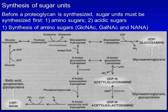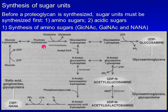All amino sugars — N-acetylglucosamine, N-acetylgalactosamine, and N-acetylneuraminic acid — are derived from fructose-6-phosphate. The hydroxyl group at C2 position of fructose-6-phosphate is replaced by an amino group donated by glutamine, giving rise to glucosamine-6-phosphate. The amino group is almost always acetylated, giving rise to N-acetylglucosamine-6-phosphate.